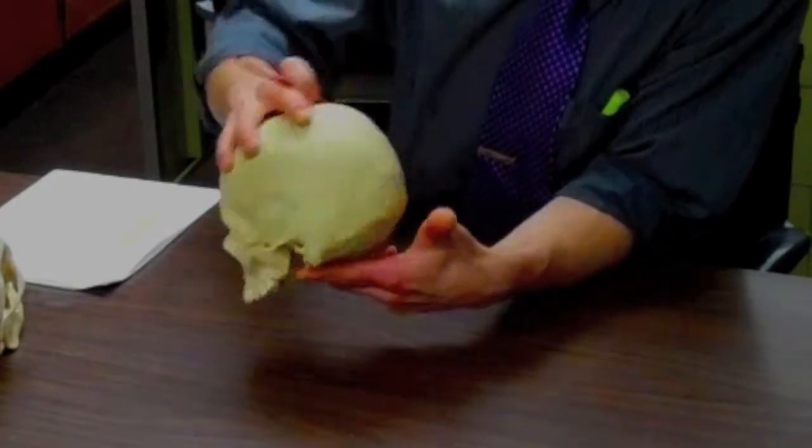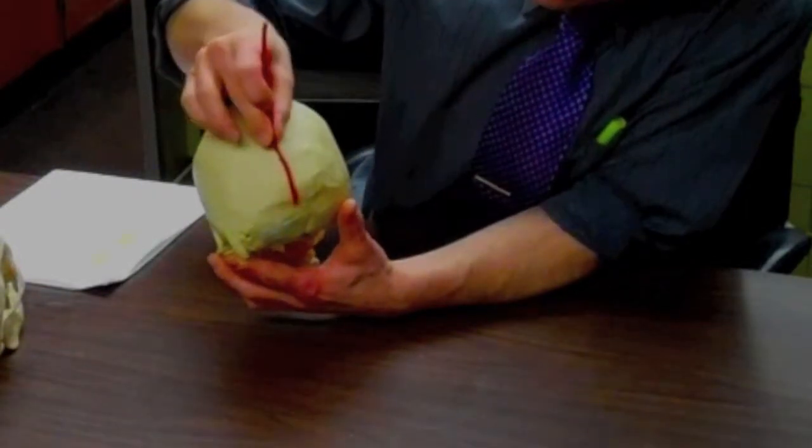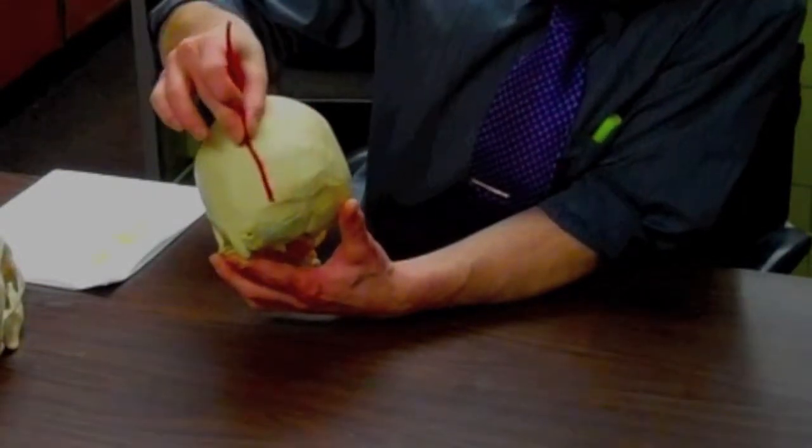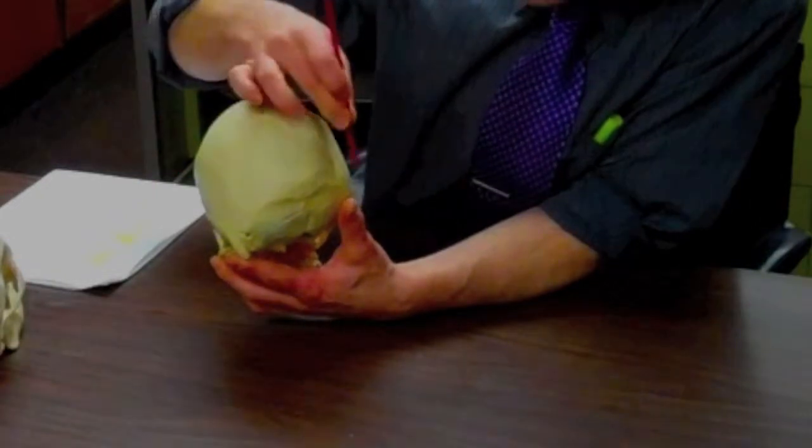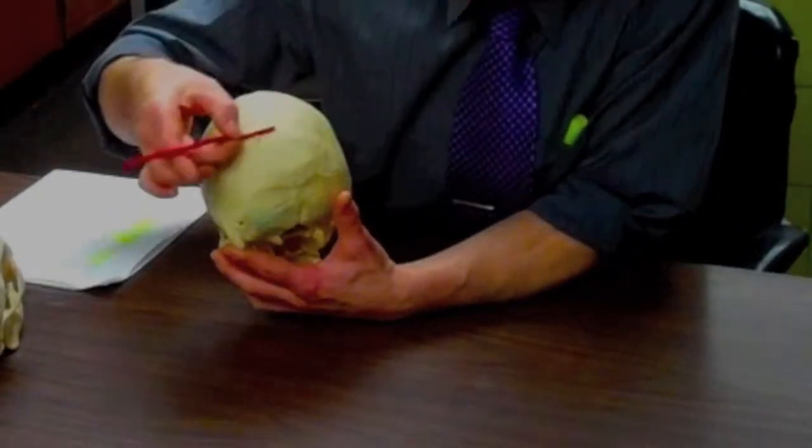At the end of the sagittal suture, we start the occipital bone and on its side it is demarcated by the lambdoid suture, right here.